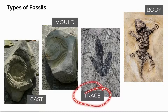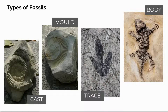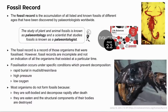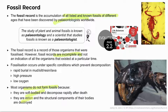A trace fossil is evidence left behind by organisms' activities like footprints, faeces, burrows, nests, or tooth marks. The fossil record lists all discovered fossils and their locations found by palaeontologists across the world, whether plants, animals, or other organisms. Over 99% of the fossil record is invertebrates. The record is incomplete because most organisms don't fossilise — they lack hard body parts, soft bodies decompose faster, or are eaten and become unrecognisable.